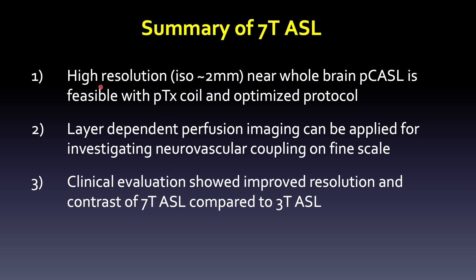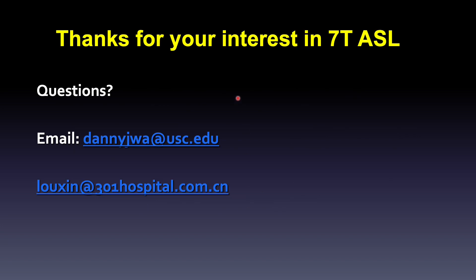To summarize, we can achieve high-resolution isotropic 2 mm near whole brain ASL at 7T with PTX coil and optimized imaging protocol and parameters. We can even achieve layer-dependent perfusion imaging to investigate neurovascular coupling on a fine-grain scale at 7T. Initial clinical evaluation shows improved resolution and contrast for 7T ASL compared to 3T ASL in a variety of clinical cases. Thank you for your interest in 7T ASL. Please do not hesitate to contact me and Professor Lo for any questions.